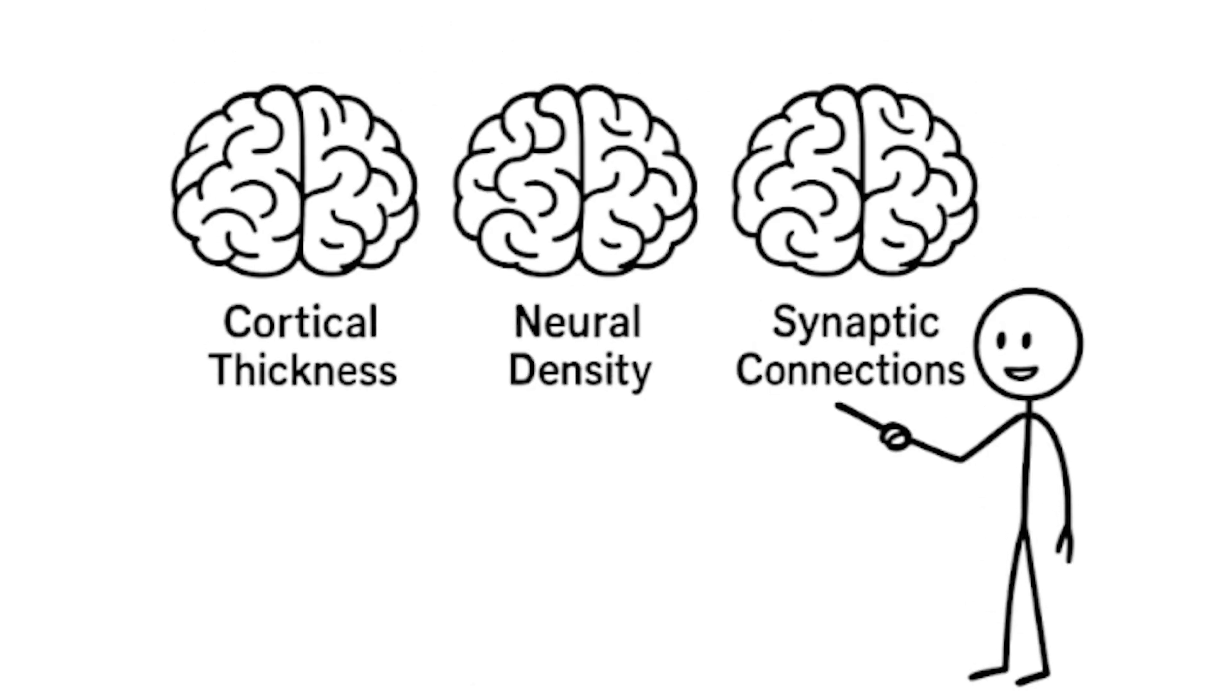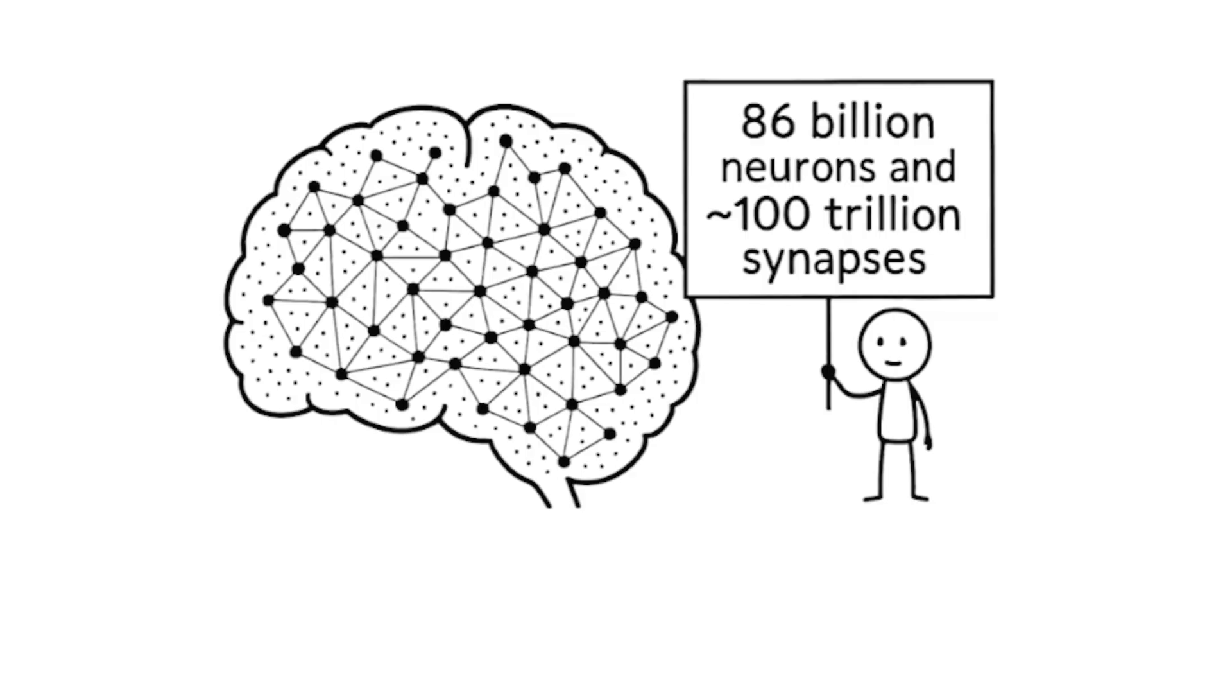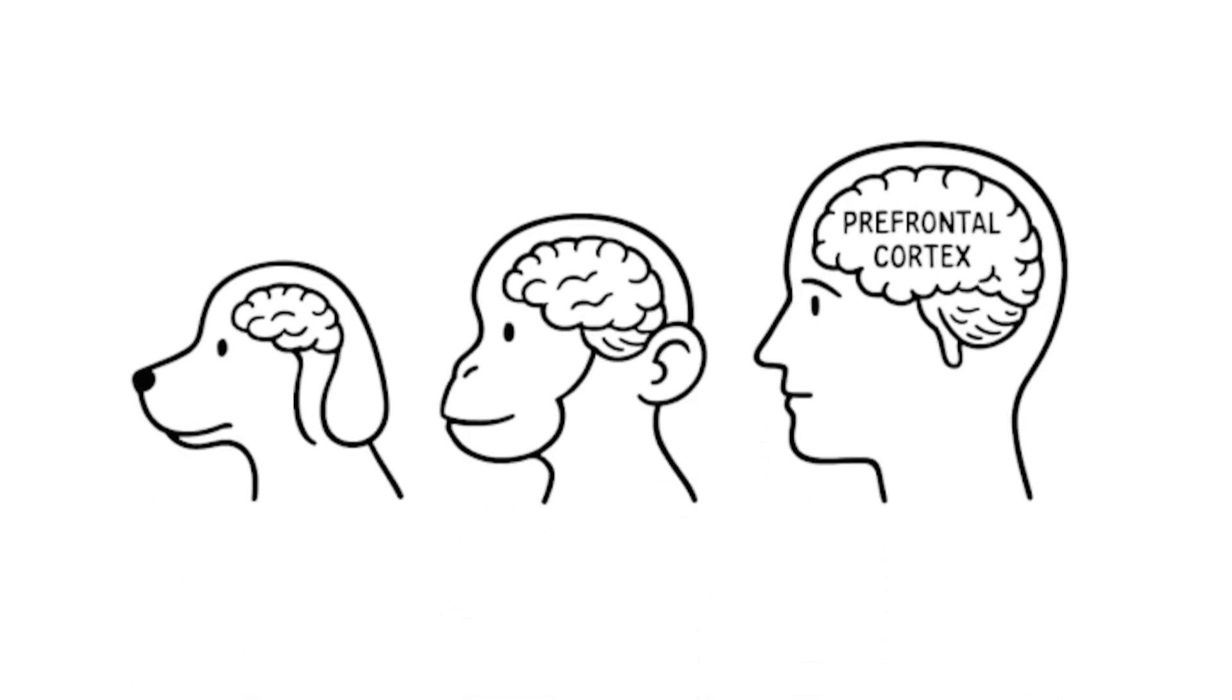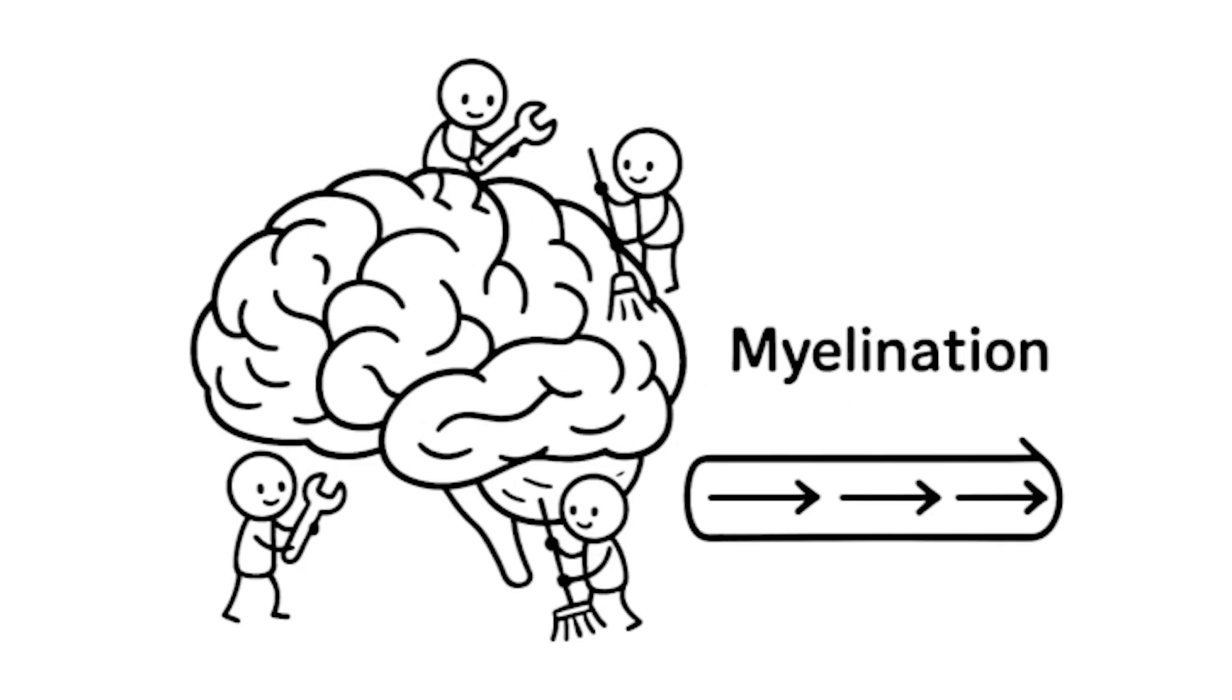Intelligence correlates more strongly with cortical thickness, neural density, and the number of synaptic connections per neuron. Humans have about 86 billion neurons packed into our cortex, with each neuron connecting to thousands of others through approximately 100 trillion synapses. Our prefrontal cortex, the area responsible for executive functions like planning and abstract thinking, is proportionally much larger than other mammals. Additionally, we have more glial cells that support neural function and faster myelination that speeds signal transmission.